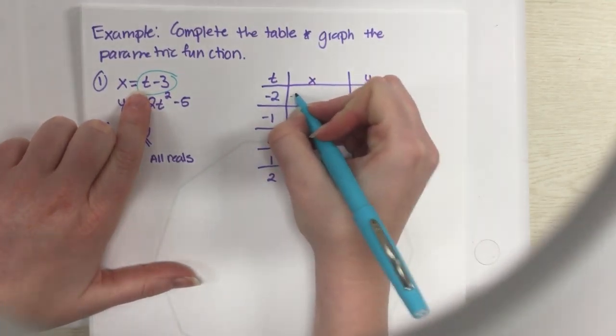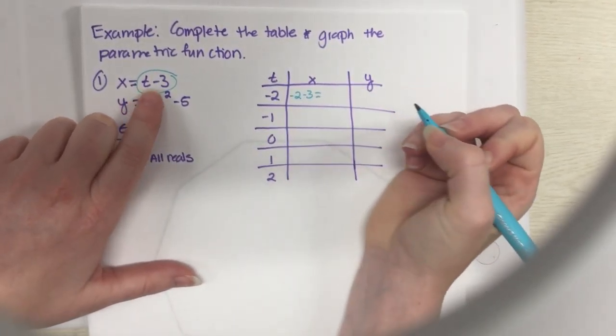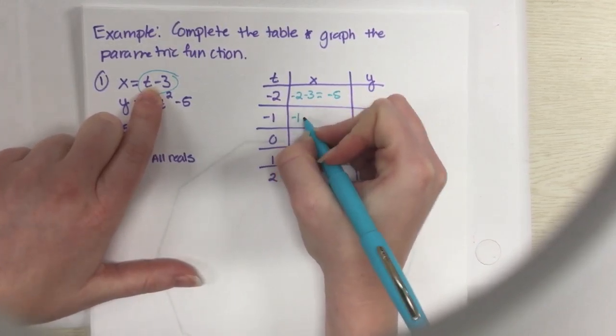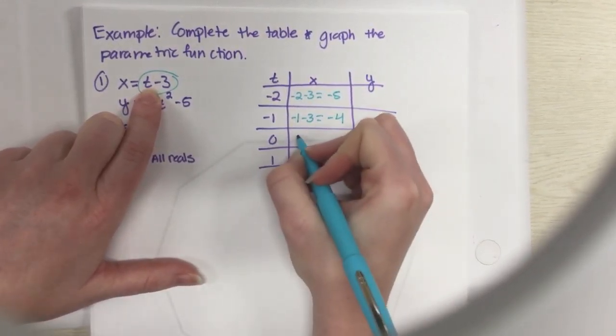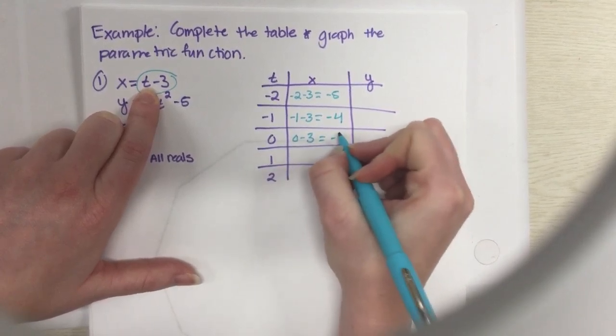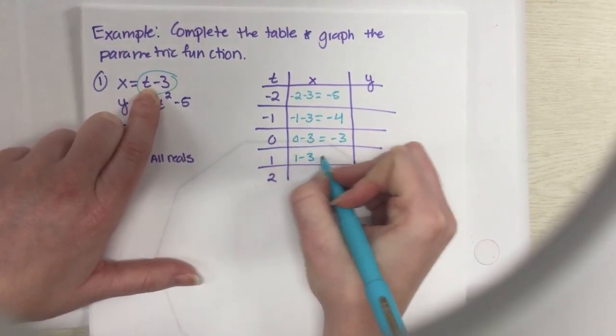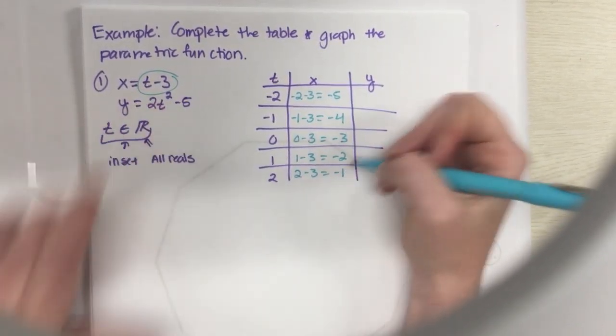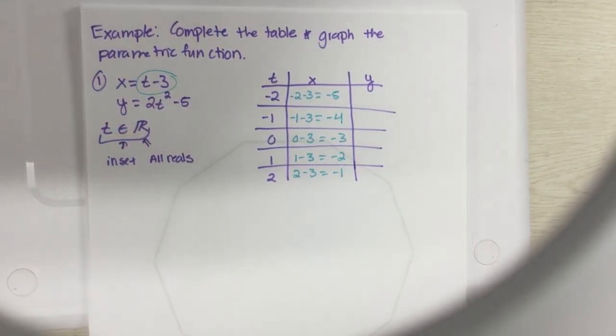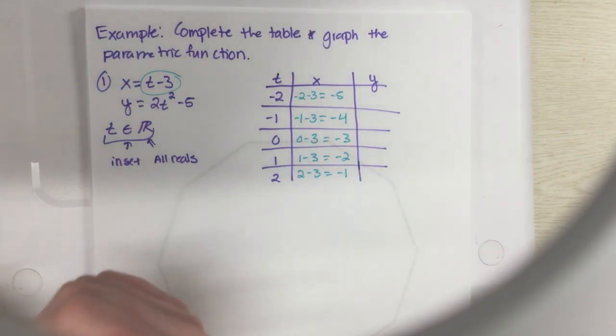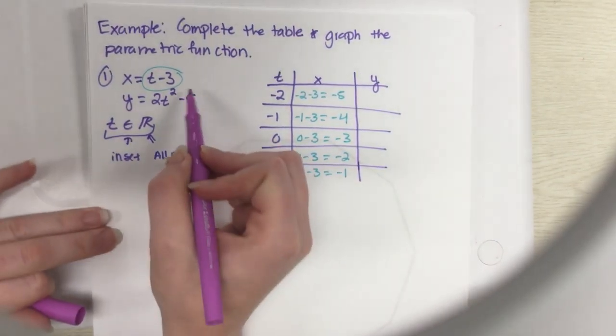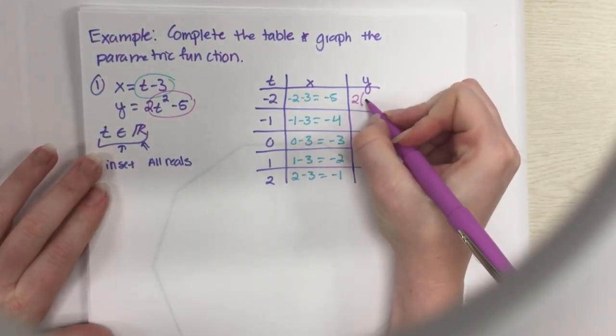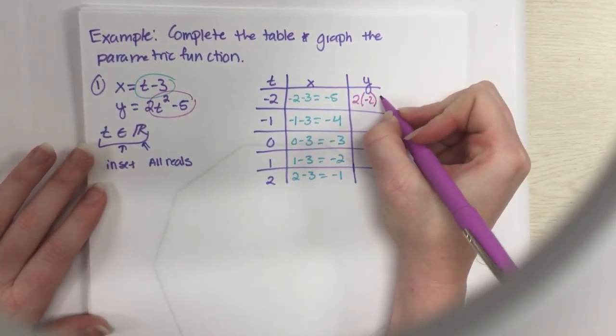We'll go ahead and the easy part is just we're gonna fill out our x and our y. Our x right here is t minus 3, so negative 2 minus 3 is negative 5, negative 1 minus 3 is negative 4, 0 minus 3 is negative 3, 1 minus 3 is negative 2, and 2 minus 3 is negative 1. So those are all of our x values: negative 5, negative 4, negative 3, negative 2, negative 1.